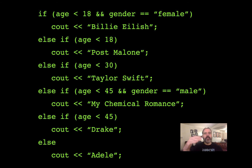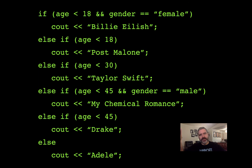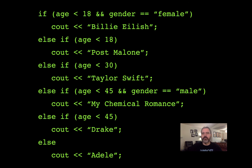Notice I made my job much easier by going in order of age from lowest to highest. Because we match the first condition and exit, I didn't need to specify full age ranges for each branch. If I had started with My Chemical Romance fans first, I would have needed to write 'age < 45 AND age > 29 AND gender == male' to cover the right range. Ordering your branches logically makes your conditionals simpler.